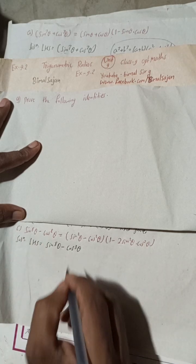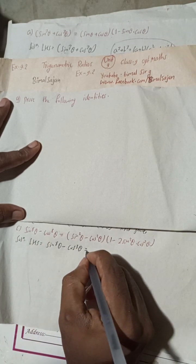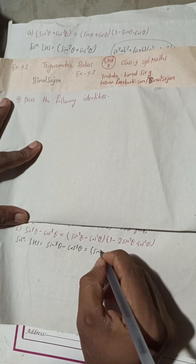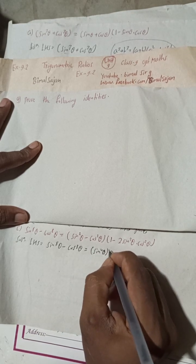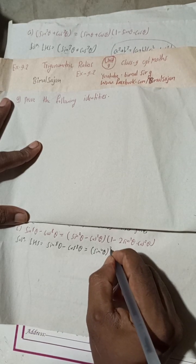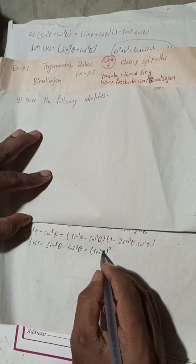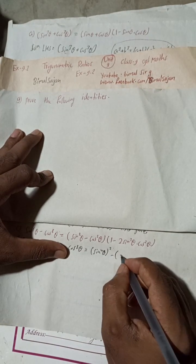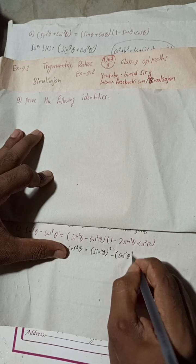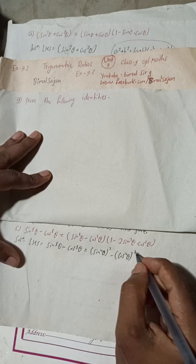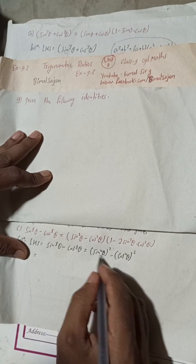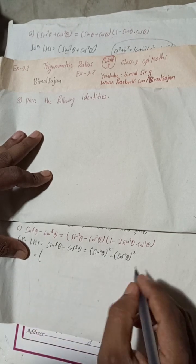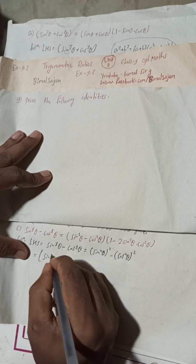Taking the LHS, this can be written as (sin⁴θ)² minus (cos⁴θ)². This is in the form of a² minus b², and the formula for a² minus b² gives us (sin⁴θ - cos⁴θ) and then (sin⁴θ + cos⁴θ).